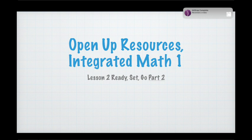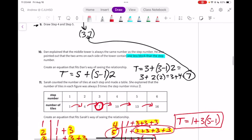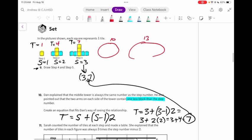Part 2 of the Ready, Set, Go. We're going to look at Nancy's approach to the problem. It's the same problem that we had back here where we have this growing T shape.